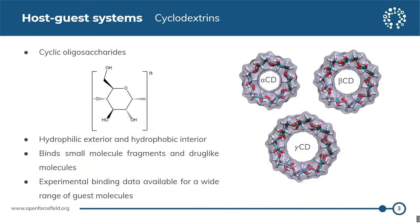In particular, the host we'll be focusing on is cyclodextrins. It is a cyclic oligosaccharide consisting of glucose monomers. The naturally occurring cyclodextrins are alpha, beta, and gamma, consisting of six, seven, and eight glucose monomers, respectively. They have a hydrophobic interior with a hydrophilic exterior. They can bind small molecule fragments and drug-like molecules, and the experimental binding data are available for a wide range of guest molecules.